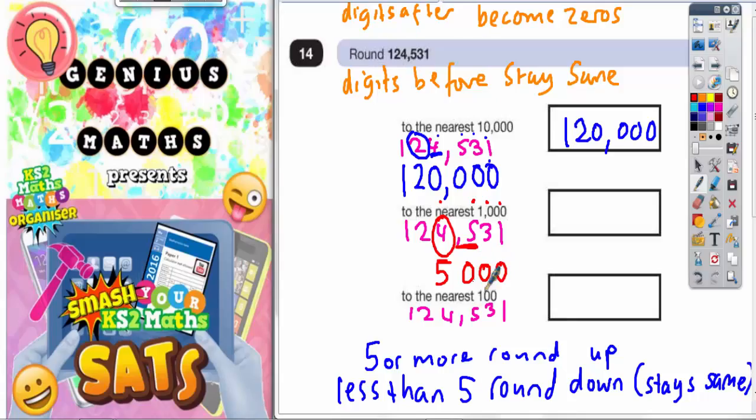Three zeros to replace the 5, 3, and 1. But digits beforehand stay the same. So the 1 and the 2 just need to stay the same. So the answer to that question is 125,000. This method will work every time.